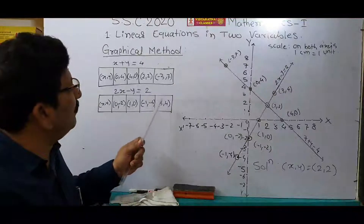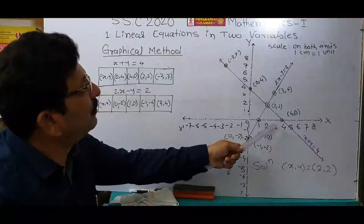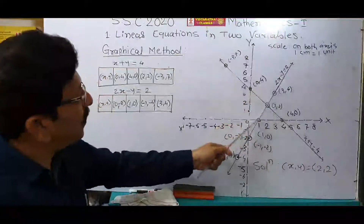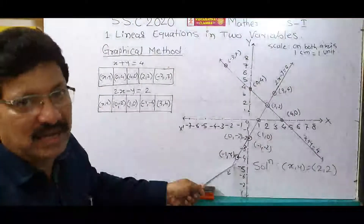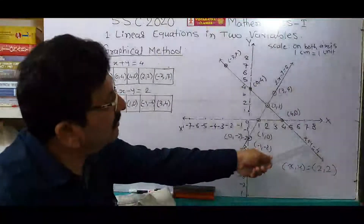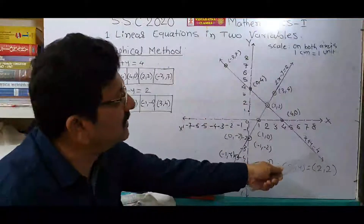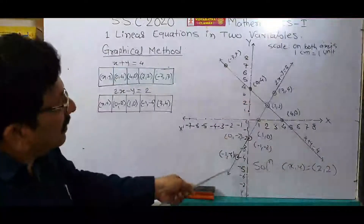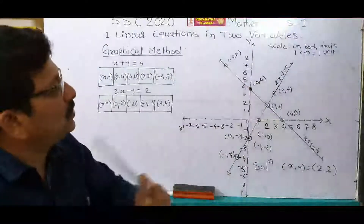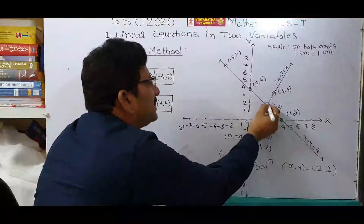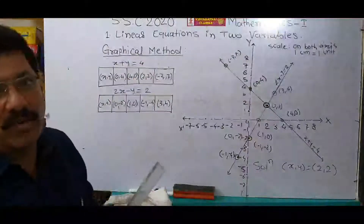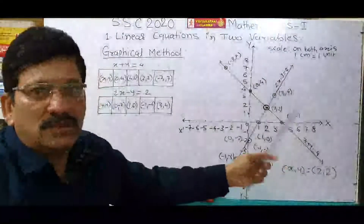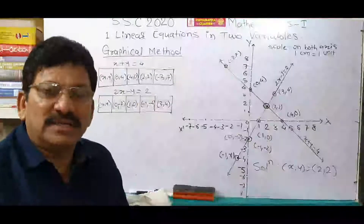And the last one is (3, 4): 3 on the x-axis and 4 on the y-axis. Again, we find that all these 4 points are collinear — they are in one line. Draw the line passing through them and write the equation on that line. This is the graph of x plus y is equal to 4, and this is the graph of 2x minus y is equal to 2. You can easily find out that these two lines intersect each other at the point (2, 2). This is the solution — x, y is equal to (2, 2) for these two simultaneous equations. This method is known as the graphical method.